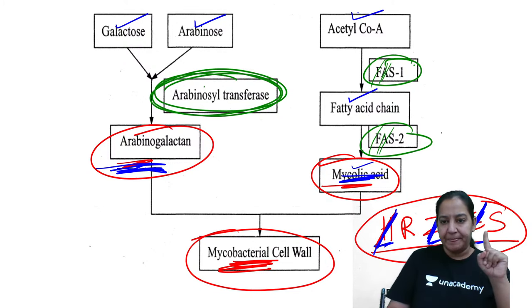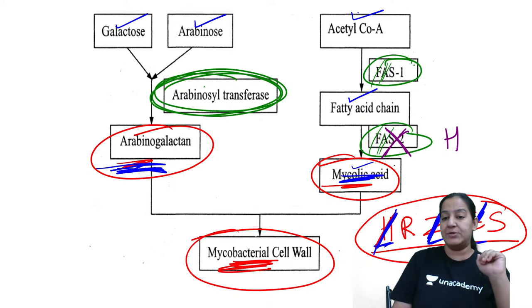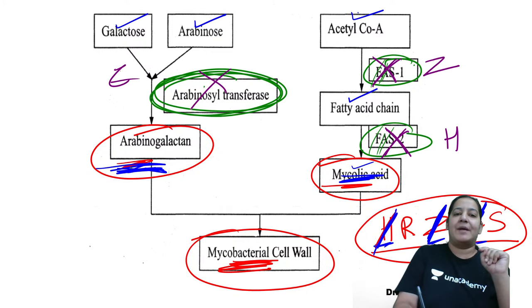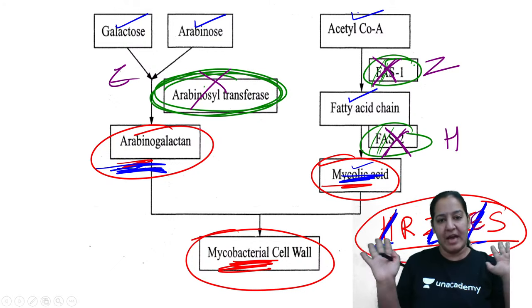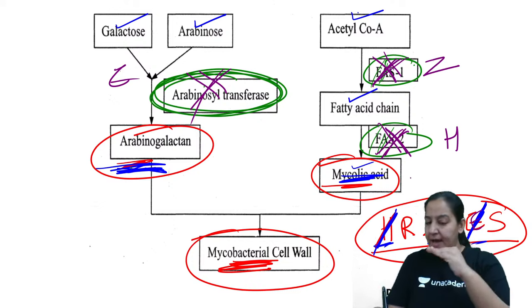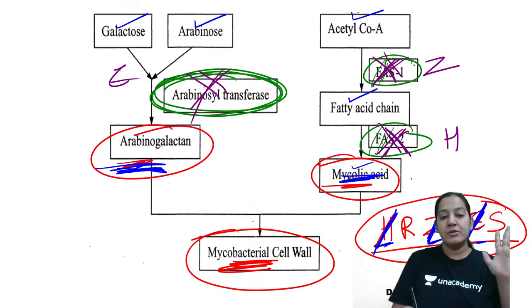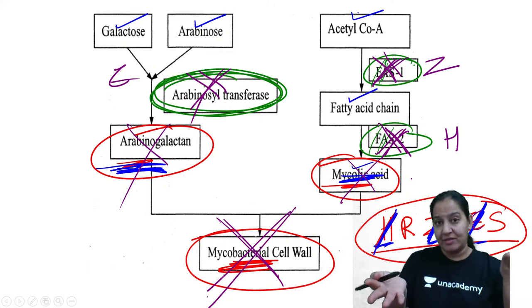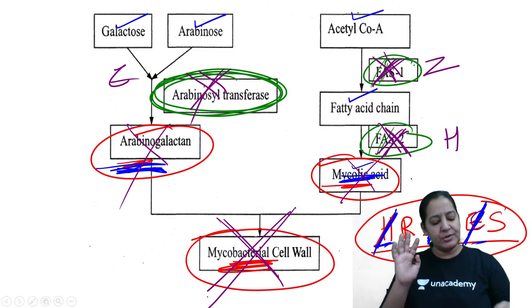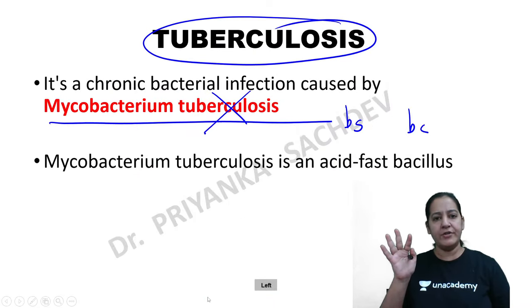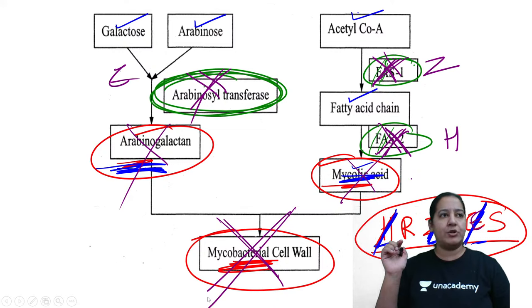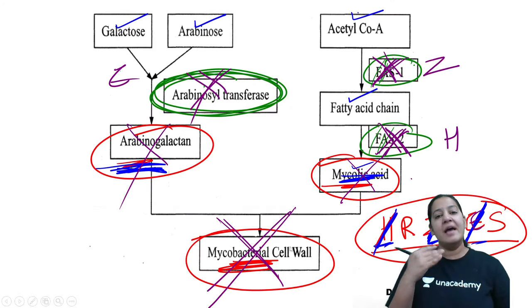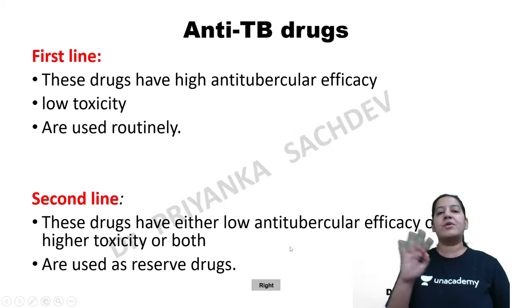For arabinogalactan synthesis, the enzyme arabinosyl transferase is required. For mycolic acid synthesis from acetyl-CoA, two enzymes are needed: FAS-1 and FAS-2 (fatty acyl synthetase 1 and 2). Isoniazid inhibits FAS-2, pyrazinamide inhibits FAS-2 as well, and ethambutol inhibits arabinosyl transferase. So three drugs' mechanisms are explained through cell wall synthesis inhibition.